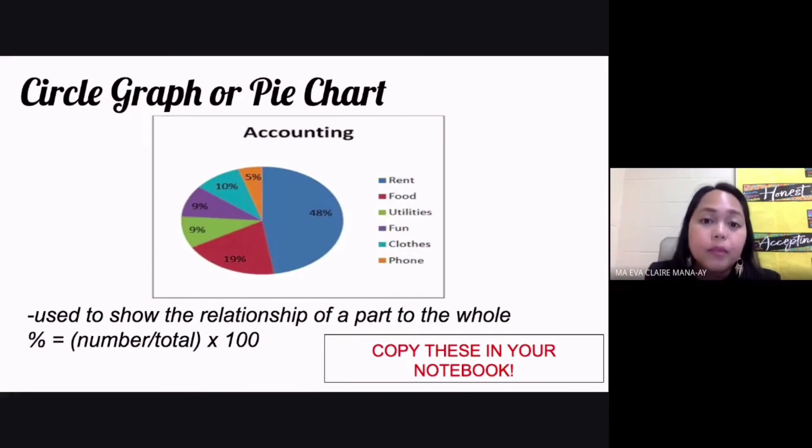The last type of graph is your circle graph, also called the pie chart. This is used to show the relationship of a part to the whole.